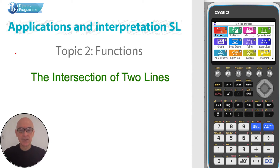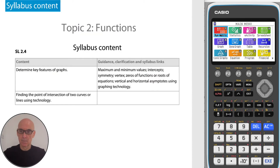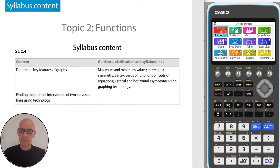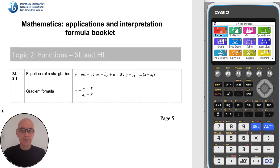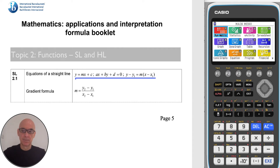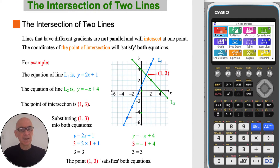In this video I'm going to talk about the intersection of two lines as shown here in the syllabus. The formulas for the equation of a straight line are given on page 5 of your formula booklet. Lines that have different gradients are not parallel and will intersect at one point. The coordinates of the point of intersection will satisfy or fulfill both equations.